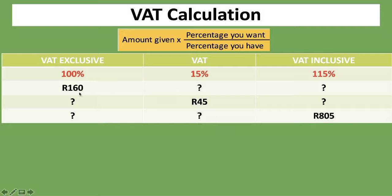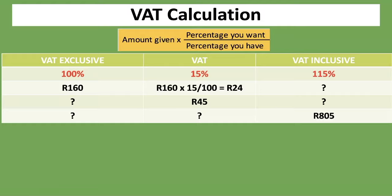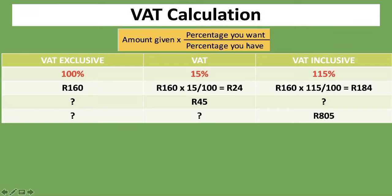The first one: we are given R160, which is the VAT Exclusive, and we have to calculate the VAT and the VAT Inclusive. To calculate the VAT: 160 RAND multiplied by 15% divided by 100%, which gives us 24 RAND. For VAT Inclusive: 160 RAND multiplied by 115% divided by 100%, which gives us 184 RAND. The denominator — the percentage that you have — always corresponds to the amount that you are given.